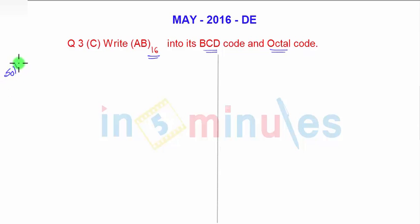First we will convert this into the BCD code. To get the BCD code of hexadecimal number we have to convert this hexadecimal into decimal. So our first aim is convert AB which is the hexadecimal number into decimal.